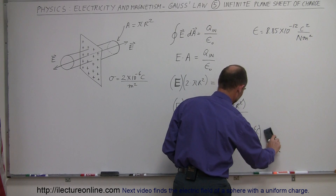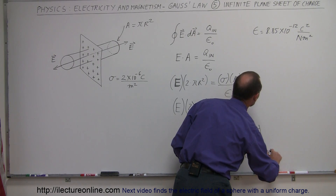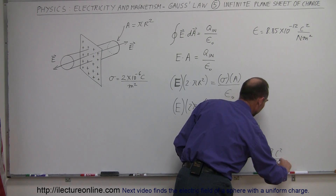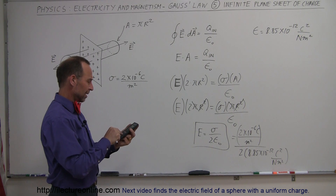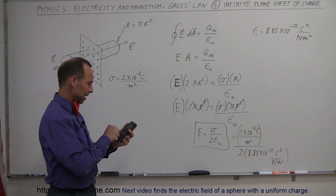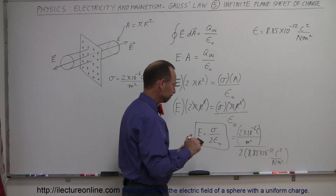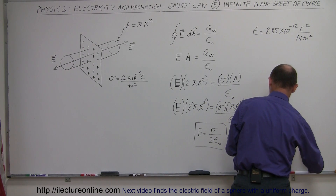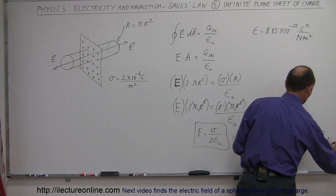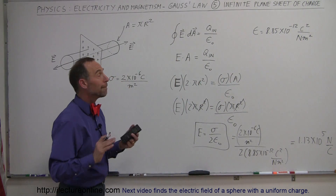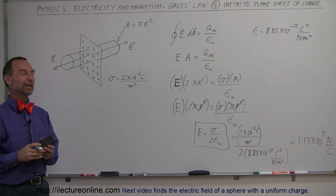We divide sigma by 2 times epsilon sub nought, which is 8.85 times 10 to the minus 12 coulombs squared per newton meter squared. Using a calculator: 2 times 10 to the minus 6 divided by 2 divided by 8.85 times 10 to the minus 12 gives us 1.13 times 10 to the fifth newtons per coulomb. That's the magnitude of the electric field. The direction is perpendicular away from the surface. And that's how we find the electric field for an infinite plane sheet of charge.